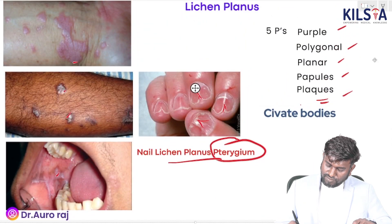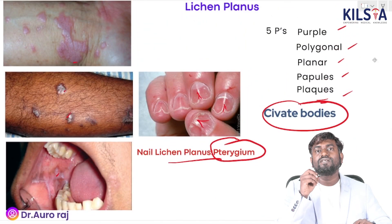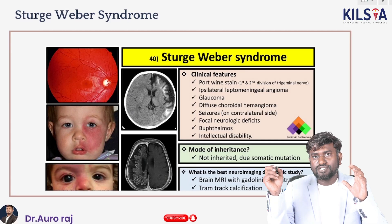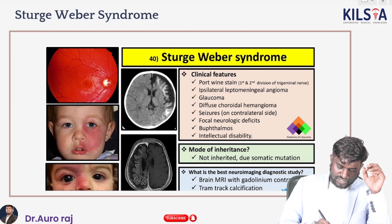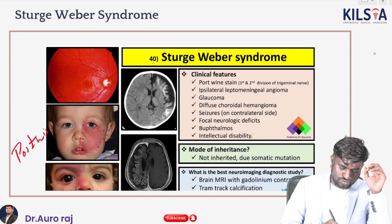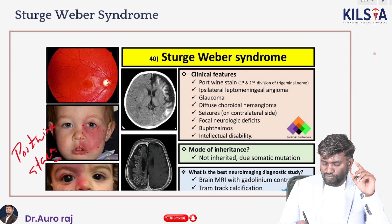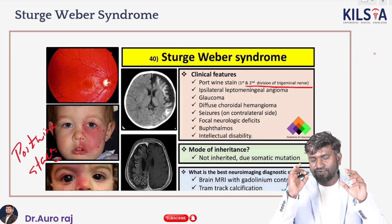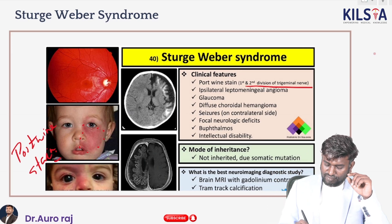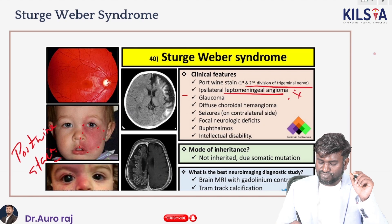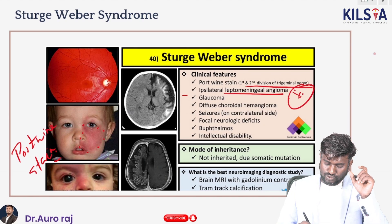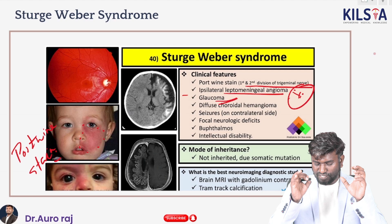Also remember Civatte bodies seen in lichen planus. In Sturge-Weber syndrome, you will see a very important finding called port wine stain. Port wine stain is due to involvement of the first and second divisions of the trigeminal nerve. The patient may also have ipsilateral leptomeningeal angioma and glaucoma — remember these three points.